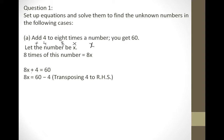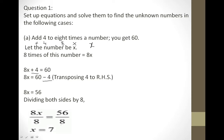We have to separate the terms consisting only of constants from those consisting of coefficient and variable. So we transpose this 4 to the RHS and it becomes negative 4. So 8x is equal to 60 minus 4, giving 8x equals 56. Now dividing both sides by 8, we get 8x upon 8 equals 56 upon 8. This 8 and 8 cancel each other, so x is equal to 7. This is the solution of the given word equation.